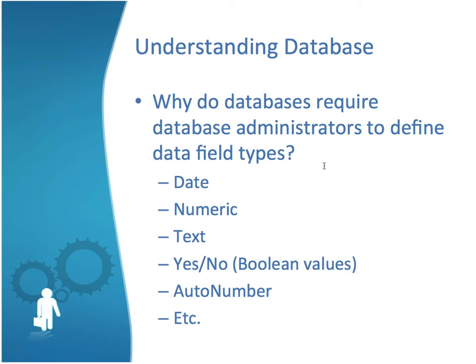A yes-no boolean value is the same as a checkbox or something that's true-false — it's either one or the other, and this is one of the smallest database entities. The reason that matters is because databases can have millions and millions of records, and a good database design will help minimize the size of those databases and keep them from mushrooming into something difficult to manipulate or extract data from. A database administrator's responsibility is to be concise with the data they're developing a table for.